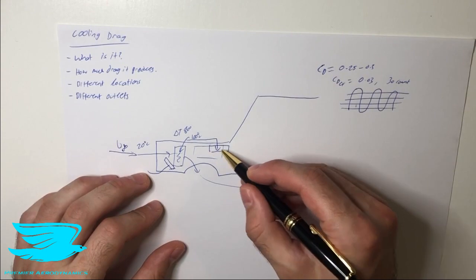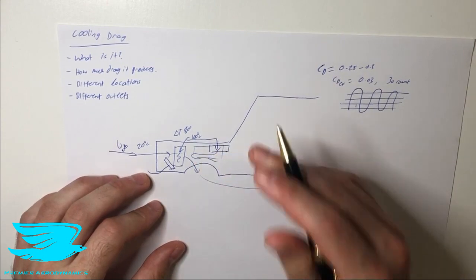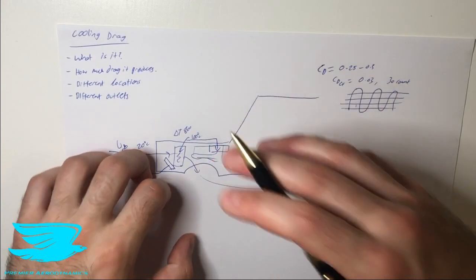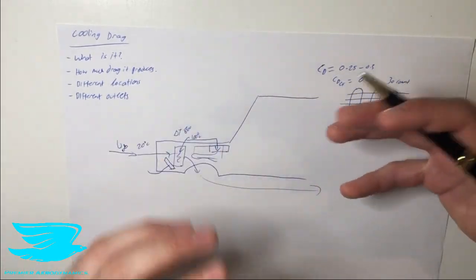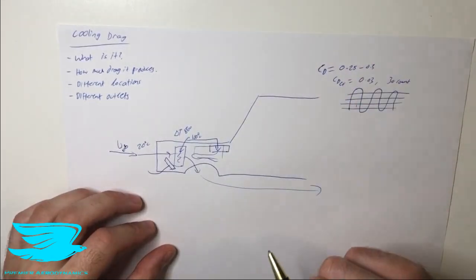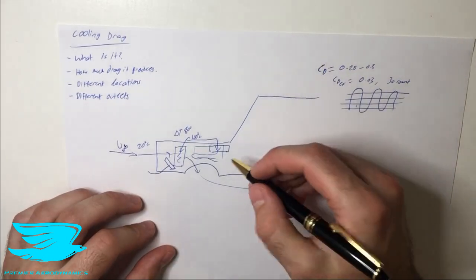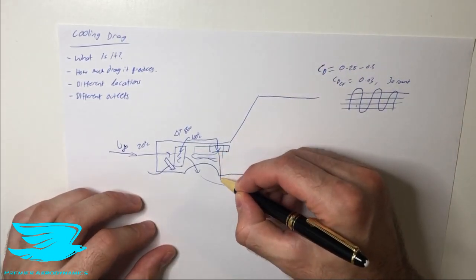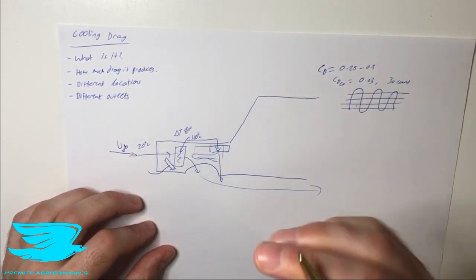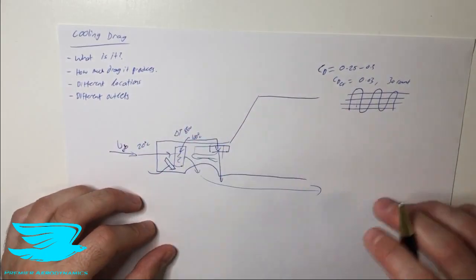If putting the radiator here means that the flow has to snake around, that's obviously not a good idea because the more it has to snake around, the more energy you will lose, the greater the drag. Also, if you have the flow coming down and it has to pop straight out down like this, that's not good either. This is where we get into the different locations of the flow coming out.